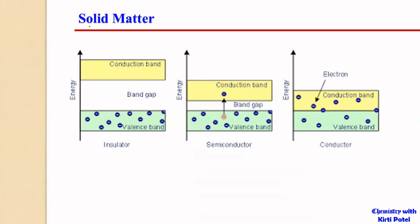Solid matter can be classified into three different types: one as an insulator, second as a semiconductor, and third as a conductor, depending on the energy gap between the conduction band and the valency band.